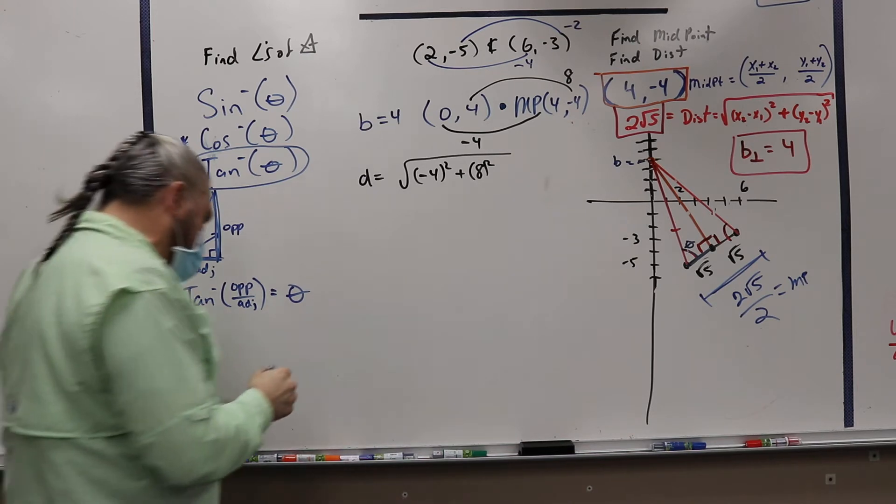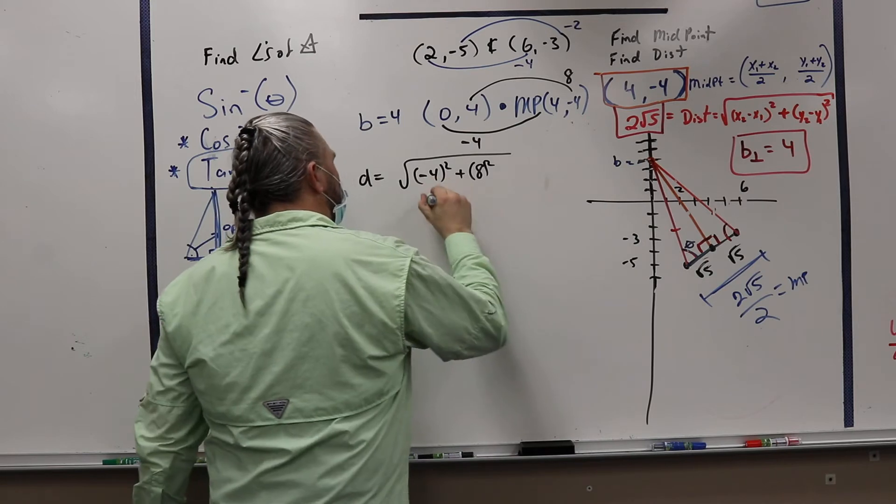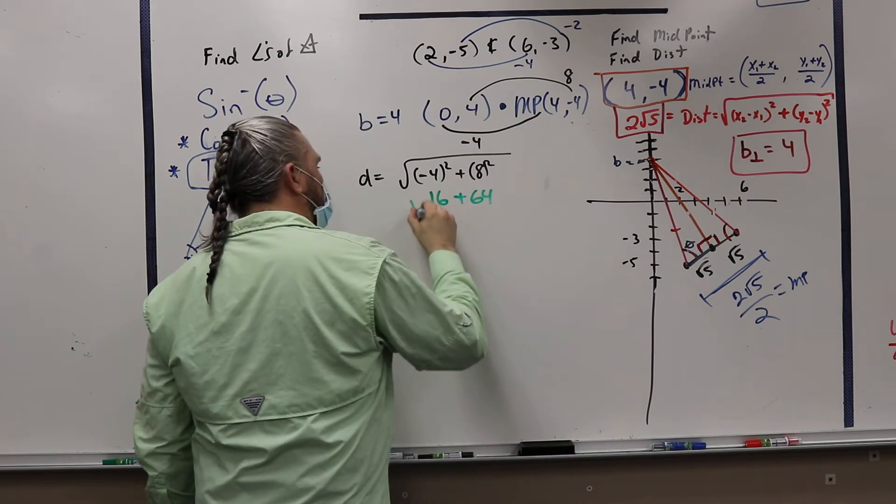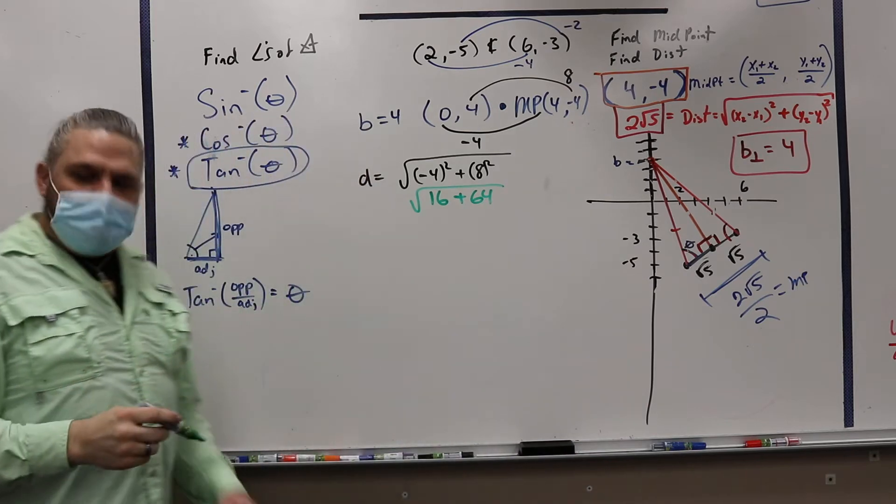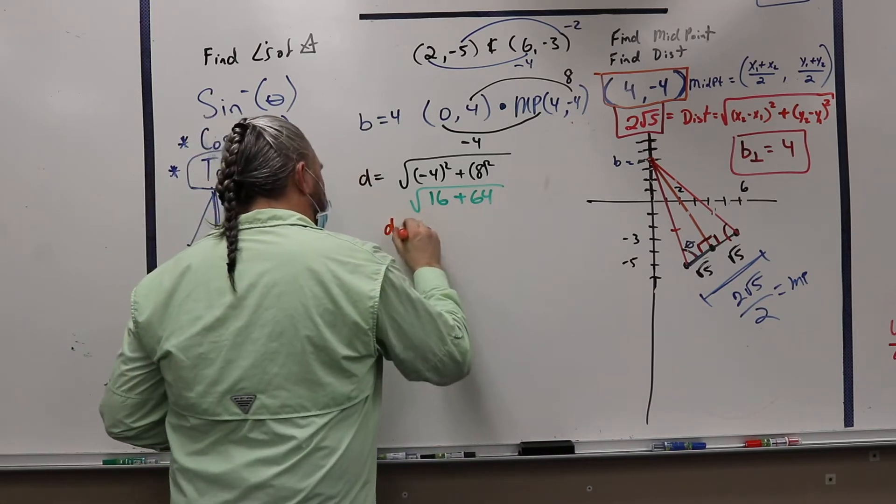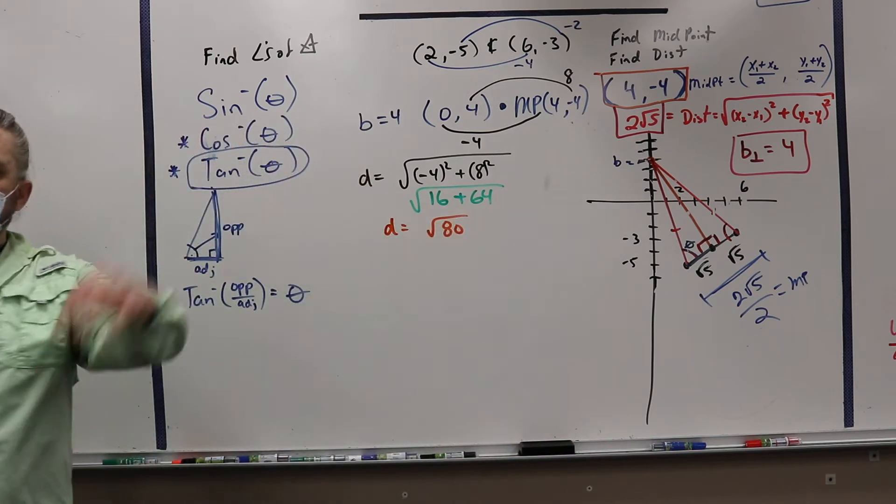So then 4 squared and 8 squared. So how much is that? 80. So the distance is the square root of 80. And then I want to see it broken down.